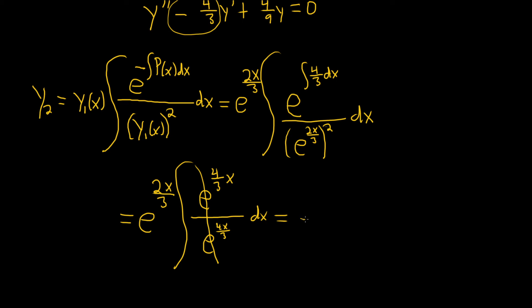This is equal to e to the 2x over 3 times the integral of 1 dx. And then 1 integrates to just x. So this is e to the 2x over 3 times x. And that's the answer.